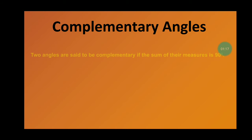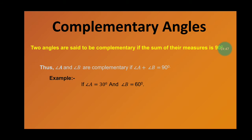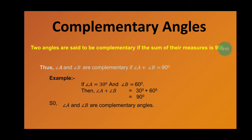Complementary angles: two angles are said to be complementary if the sum of their measures is 90 degrees. That is, angle A and angle B are complementary if angle A plus angle B equals 90 degrees. For example, if angle A equals 30 degrees and angle B equals 60 degrees, then 30 plus 60 equals 90 degrees, so angle A and angle B are complementary angles.